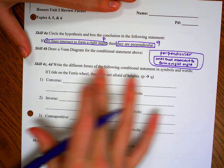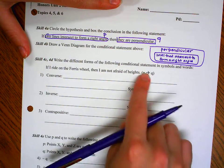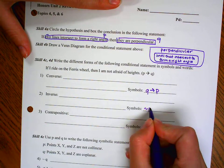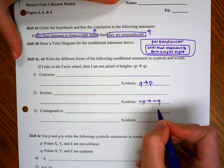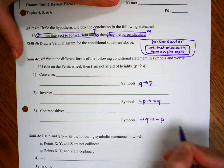Let's keep going. Write the different forms of the following conditional statement in symbols and words. We know our converse is when we switch the order. We know our inverse is when we negate P and we negate Q. And then our contrapositive is when we negate Q and we negate P.